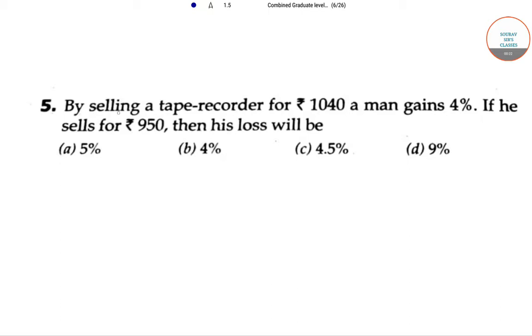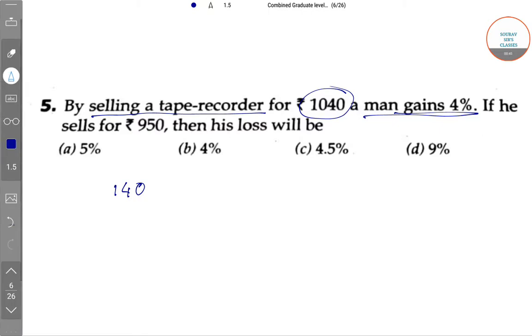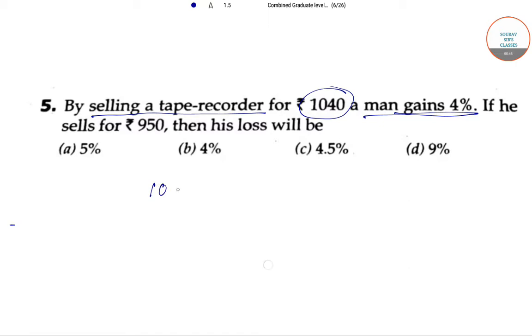By selling a tape recorder for 1040 rupees, a man gains 4%. We can consider that 1040 rupees, not 140, so 1040 was the selling price for the first one, SP1.